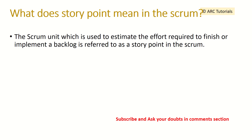What does story point mean in scrum? A story point is the scrum unit used to estimate the effort required to finish or implement a backlog item. It is an estimate of how much time or complexity a user story takes.